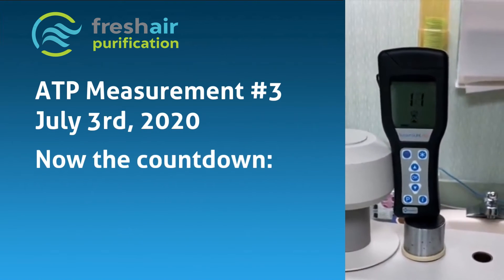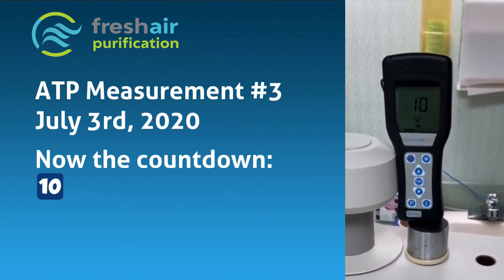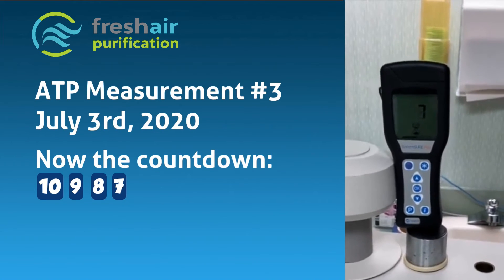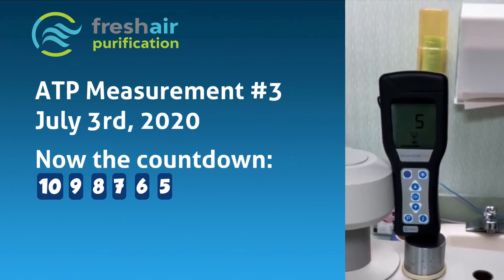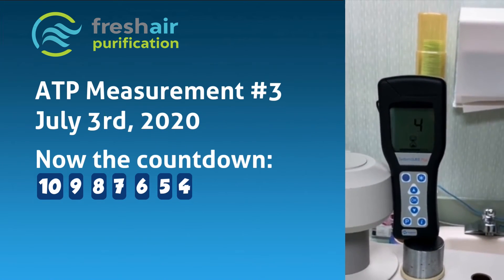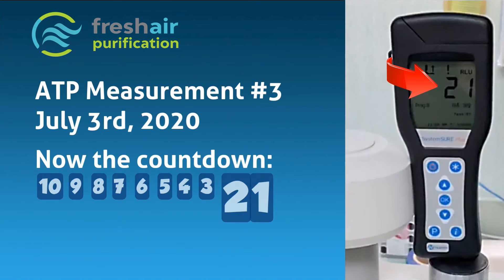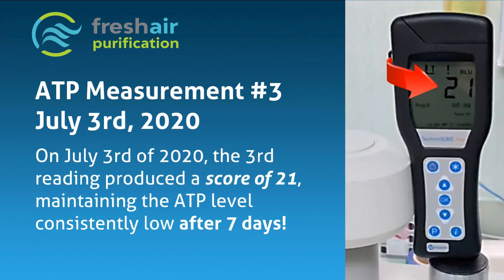Now the countdown: 10, 9, 8, 7, 6, 5, 4, 3, 2, 1. On July 3, 2020, the third reading produced a score of 21, maintaining the ATP level consistently low after seven days.